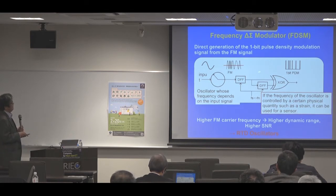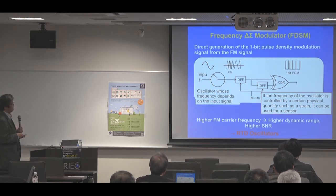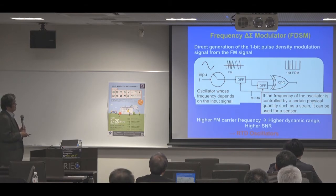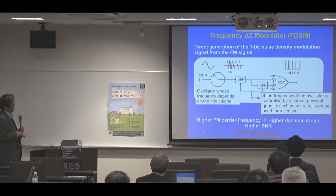This circuit outputs pulses when the FM signal crosses the zero-volt line, making it easy to obtain the pulse-density modulated signal. If the frequency of the oscillator is controlled by a certain physical quantity such as strain, it can be used as a sensor. The performance of this modulator depends strongly on the oscillation frequency — a higher FM carrier frequency leads to higher dynamic range and higher SNR — so employing the resonatomic diode oscillator is very promising.